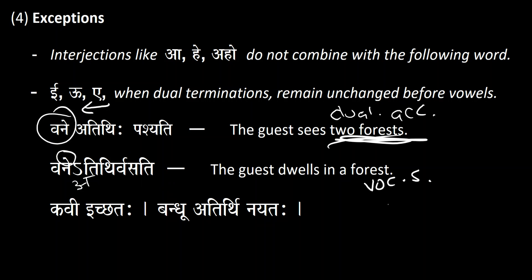So, the guest dwells in the forest, and the guest sees two forests. Next, 'kavi ichataha' — 'ichataha' is a dual termination. Because 'ichataha' is a dual termination — ti, taha, anti, this is third person dual — nothing happens. It is not joined to become 'kavyichataha.' That is an exception; it just stays the way it is.